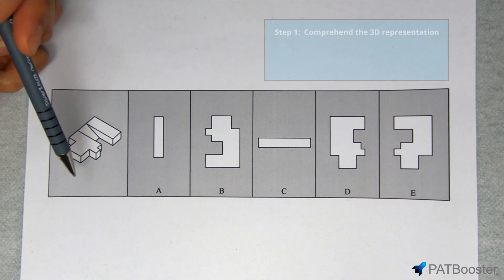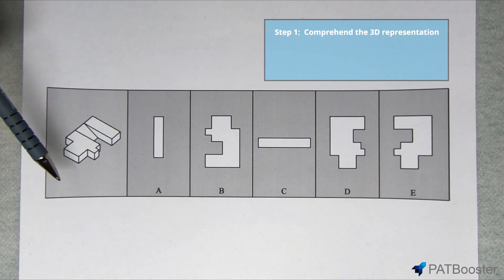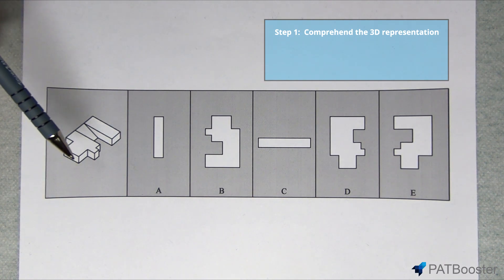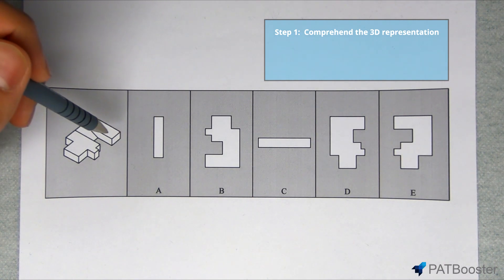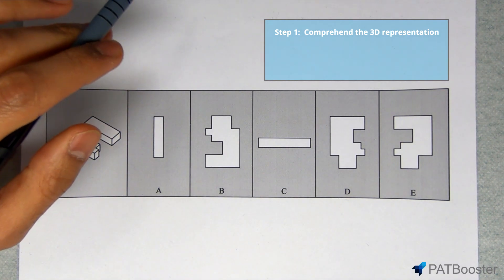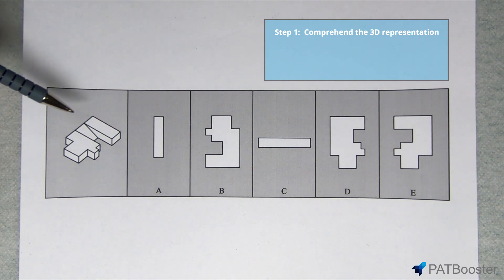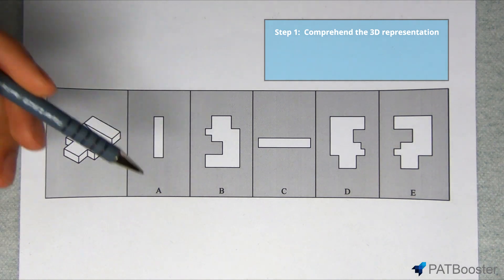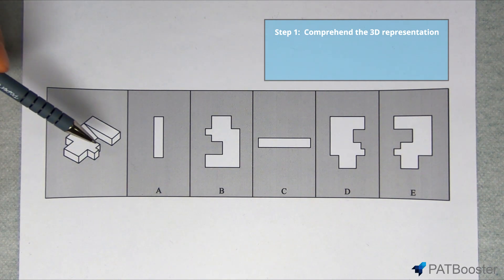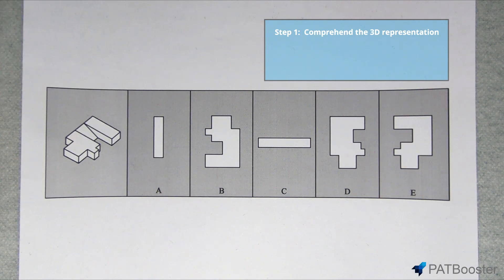Step number one is to comprehend the 3D object. The first thing you should do when you come across a question is to just quickly comprehend the object they've given you. Now I'm not talking about analyzing it and figuring out what the top, front, or side views look like. No. All I want you to do is look at the object, gain an understanding of what's happening, make sure nothing is looking like an illusion and that's it. Should take you no more than five seconds. There's nothing to it. So if I were to do it for this object, I'd see there's a big notch here, one up here, right angle here, and a little extension here. That's it.